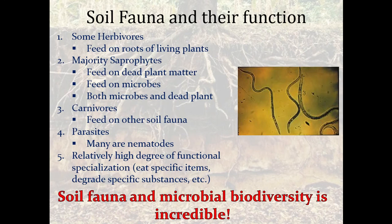Some herbivores feed on roots of living plants. Saprophytes are mostly feeding on dead plant matter or microbes. Carnivores feed on other soil fauna. Parasites — many of them are nematodes, which is what this picture shows. There's a relatively high degree of function and specialization, with many organisms very specialized in what they eat, how they catch it, or the niche they need to thrive. The flip side is that their biodiversity is so wide and incredible that there is almost always something filling every niche.